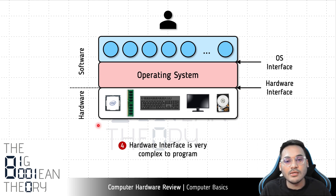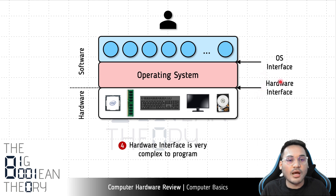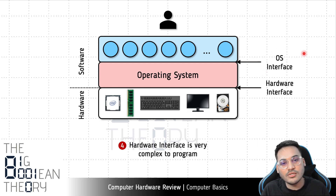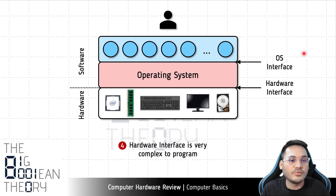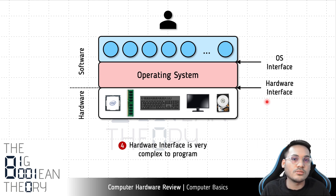If you as a programmer had to write programs directly for the hardware interface, it would be very difficult because the hardware interface is very complex. It is not feasible to write programs directly for the interface exposed by the electronic chips and hardware. So we need a layer of software whose fundamental job is to simplify this hardware interface and provide a much simpler interface — the OS interface — which abstracts out all the complexity of the hardware and makes it much easier and more productive to write programs.